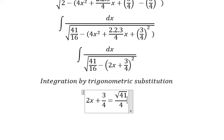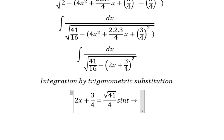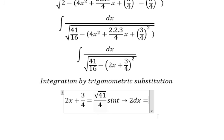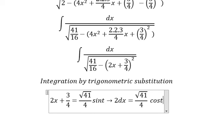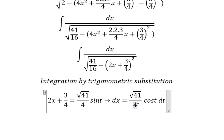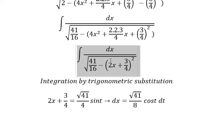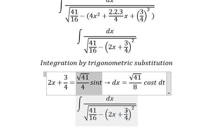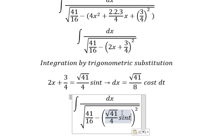Taking the first derivative, we get 2dx equals square root 41 over 4 cos t dt. We divide both sides by 2, getting square root 41 over 8. We substitute this in, changing x.